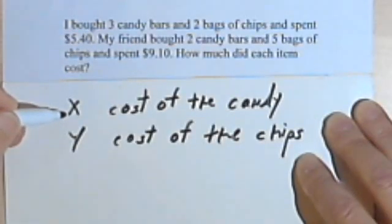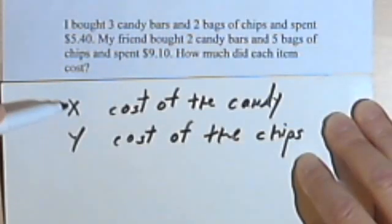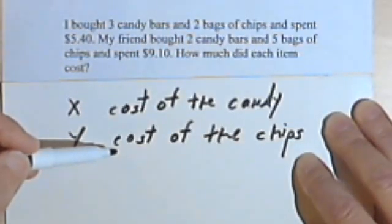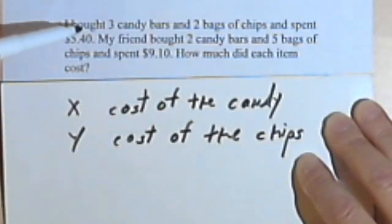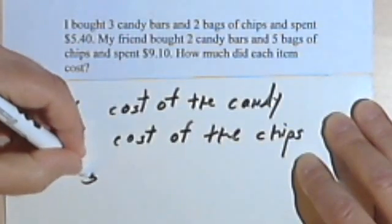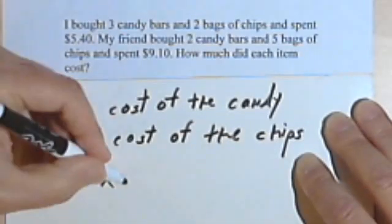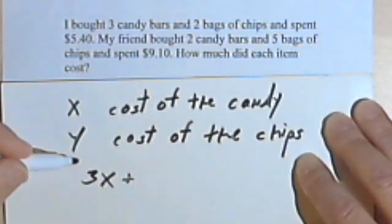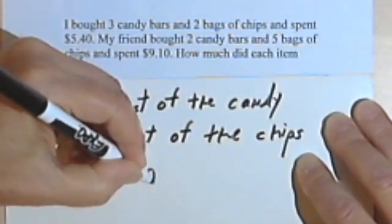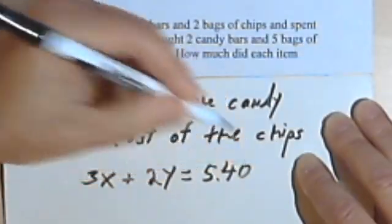The variables you use are going to be the things you're looking for, and since I'm looking for how much they cost, my variables will stand for the cost of each item. Now let's go back to the problem. Three candy bars and two bags of chips cost $5.40. So three times the cost of the candy bars, 3x would be how much the candy bars cost, and two times the cost of the chips, or 2y, would be $5.40.